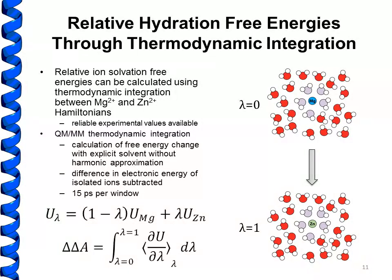When the simulation is performed at lambda equals 0, the system reflects magnesium at the center; at lambda equals 1, the system is described entirely as zinc. At intermediate values we have a hybrid between the two. The potential energy is a linear combination of these two values, and the forces are simply a linear combination of forces calculated using magnesium and zinc. Taking the derivative of U(lambda) with respect to lambda and integrating between 0 and 1 gives us the relative free energy — we've transformed between the two states alchemically to get the relative hydration free energy.